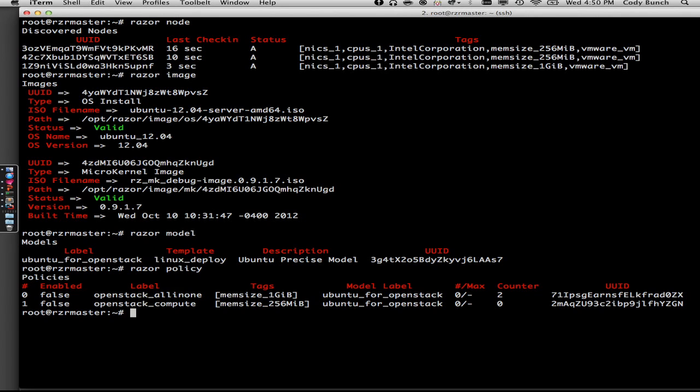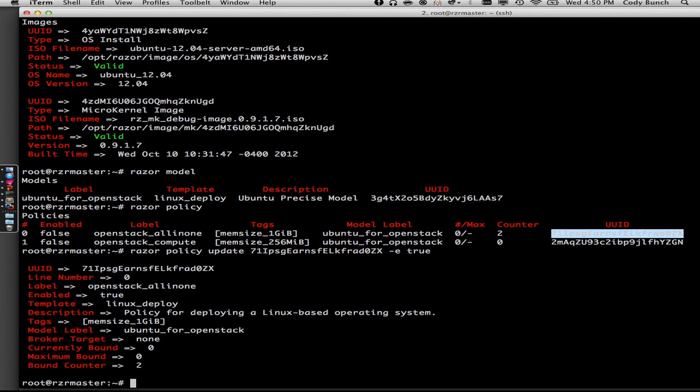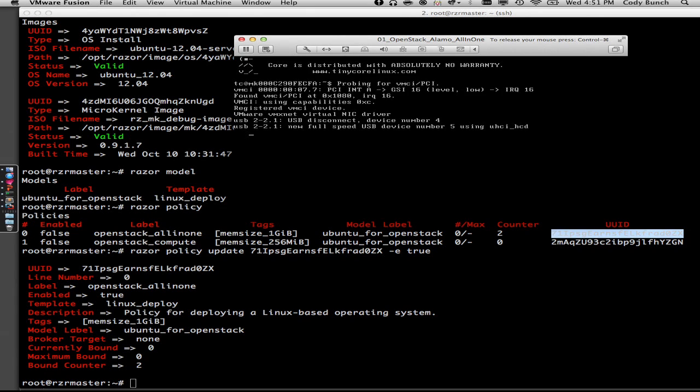And where that's important is as we get down into the weeds here. So we have a couple of policies. One for compute. The other for an all-in-one. So compute and controller all in the same box. And we've also tagged them. So my controller is tagged at one gigabyte of memory. So if you look up top, where we have the razor node list, there's one of those with one gigabyte of memory. If I had a hundred of those with one gigabyte of memory, when I apply that policy, they all reboot. They all become OpenStack all in ones. You can also set maxes and minimums on your policies. So the counter there. If I had a max of say 10, I would get 10 all in ones. So let's go ahead and enable that policy and see what happens.